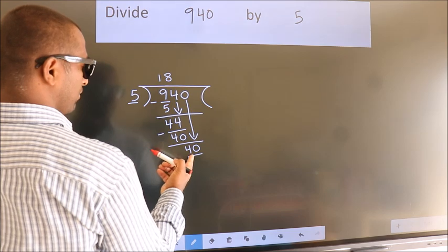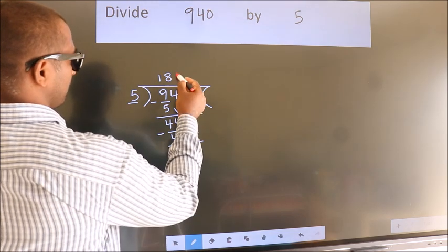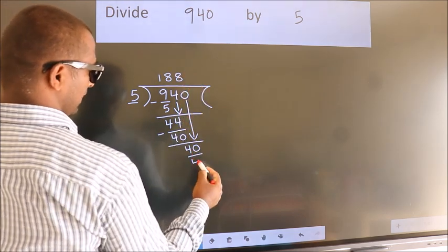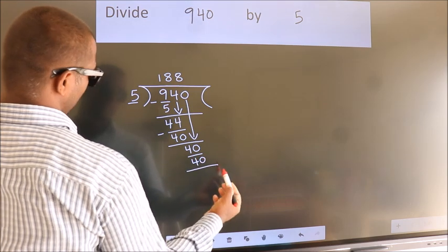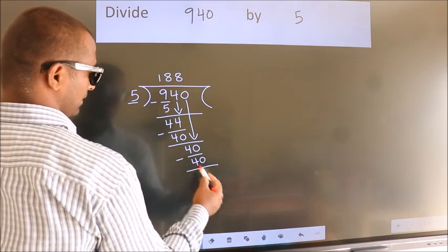When do we get 40? In 5 table. 5 eights 40. Now we subtract. We get 0.